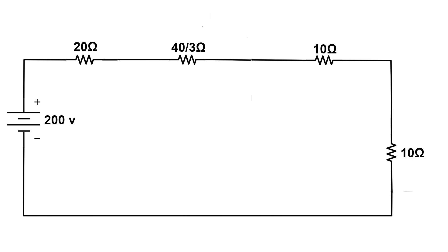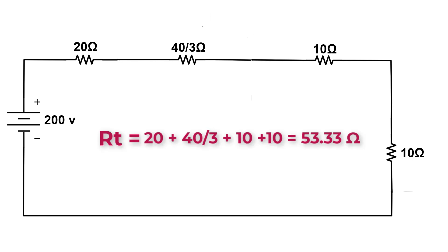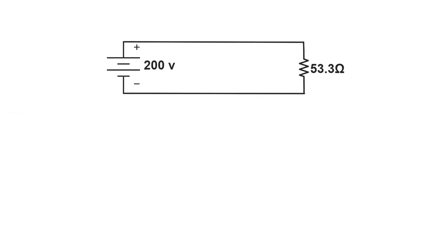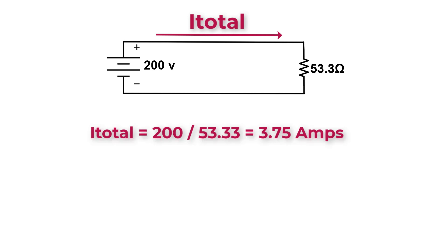Our circuit now becomes simple: four resistors are in series — 20 plus 40/3 plus 10 plus 10 — which equals 53.33 ohms. To calculate the total current from the power supply, apply Ohm's law: current equals 200 volts over 53.33 ohms, which equals 3.75 amps.